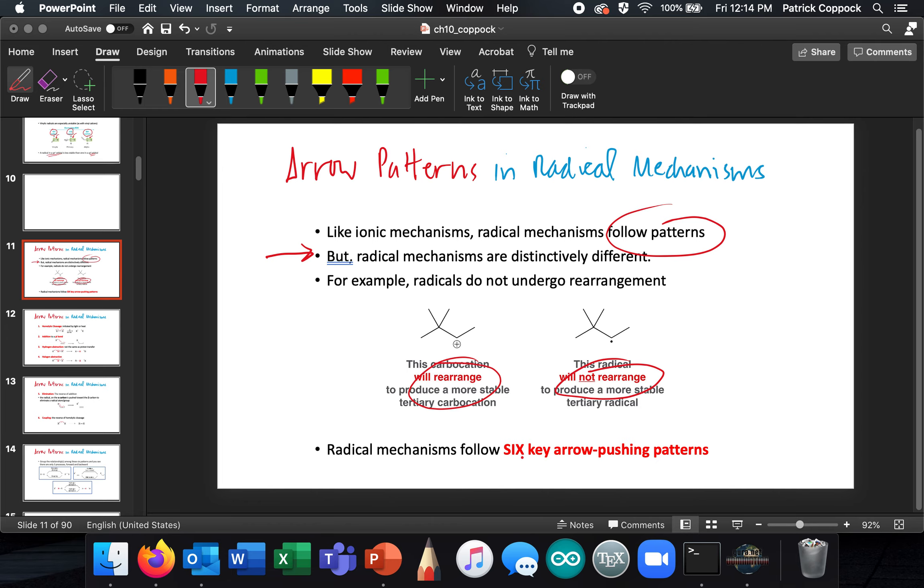So radical mechanisms follow six key arrow pushing patterns. Do you remember with the ionic mechanisms, the four patterns that we talked about before? I'm not going to name them right now because frankly, if I forgot one, I would feel really silly.